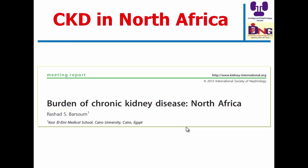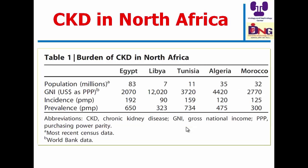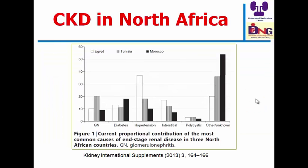The burden of chronic kidney disease in North Africa was discussed in a meeting report published by Professor Rashad Barsoum. The prevalence per million in Egypt is compared to Libya, Tunisia, Algeria, and Morocco. Looking at Egypt, the leading causes of end-stage renal disease are hypertension, interstitial nephritis, diabetes, glomerulonephritis, polycystic kidney disease, and others.